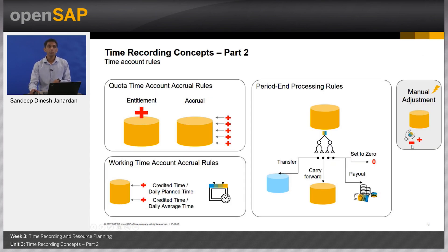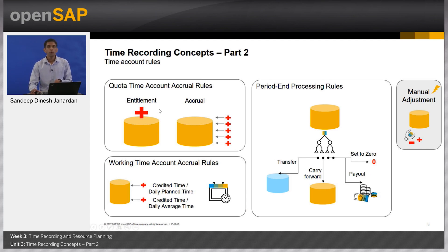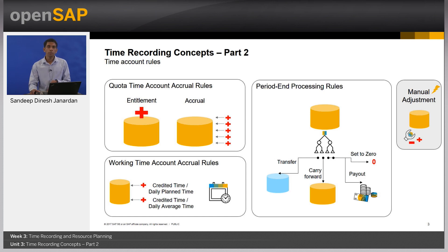In the business configuration of time accounts, rules can be created to define the number of hours posted automatically and what happens to the remaining balance at the end of the time account period. For quota accounts, you have entitlement, which is usually a one-time addition during the lifetime of the time account instance. For example, an employee may be entitled to 21 days of leave per year. The time accrual rule typically refers to increments throughout the lifetime of that time account — for example, an employee may accrue two days of leave every month.